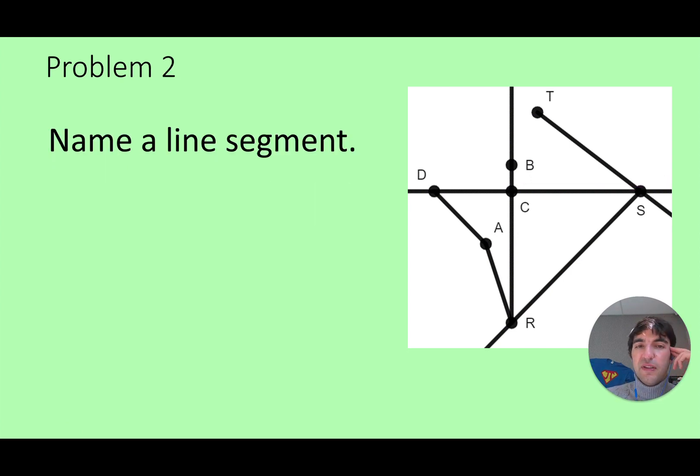Number two, name any line segment. So I have a bunch of options: DA, how about CR, TS. Basically any letters that are connected on my graph. If I put the bar over the top that means just look at the segment. I could not do something like AC because there's no connection between those two. So I would not want to do that.